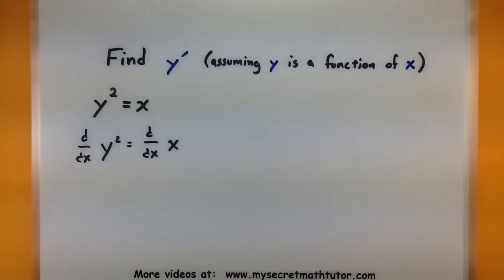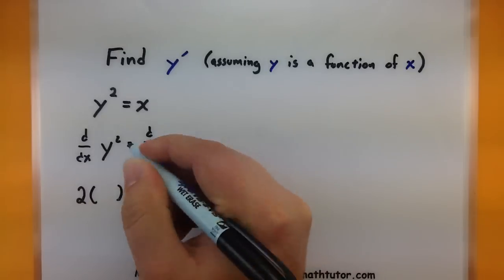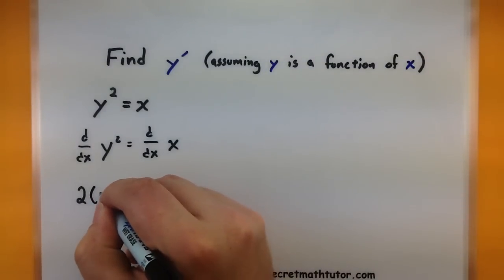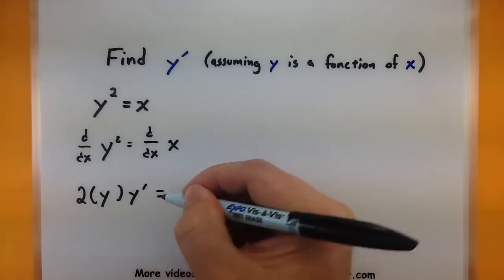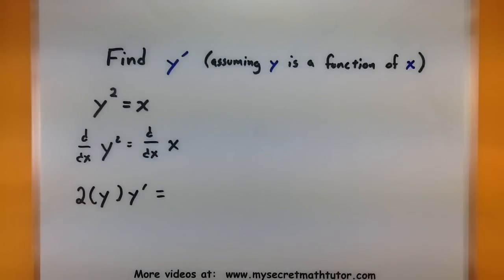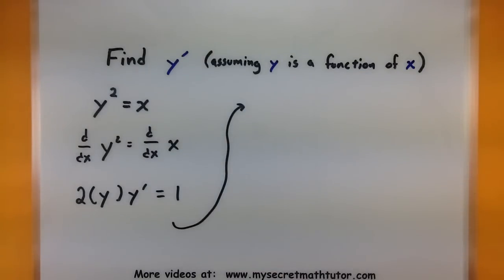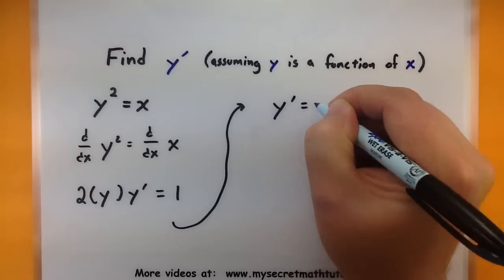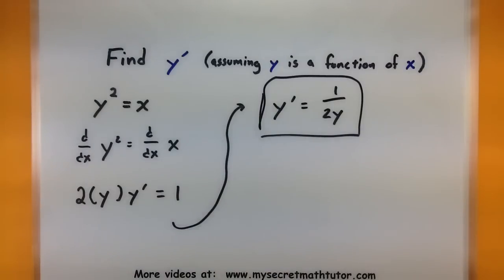Over here on the left, it's the chain rule that's going to play a part. So we'll do the derivative of the outside — I've brought down the power, reduced it by 1, so this is to the power of 1, so I'm not going to write it. Inside will stay exactly the same, and then I'll multiply by the derivative of the inside. On the right side, the derivative of x with respect to x is simply 1. There are just a few more steps — usually we want to isolate that derivative of y, so I'm going to divide both sides by 2y. And now I'm done. So y prime is equal to 1 over 2y.